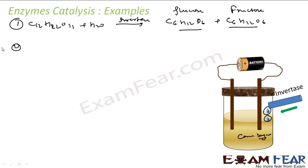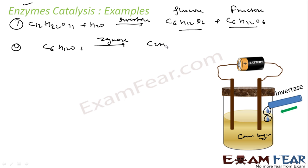The second example is the conversion of glucose to ethyl alcohol. I have glucose and I use an enzyme called zymase to convert this into ethyl alcohol and carbon dioxide.